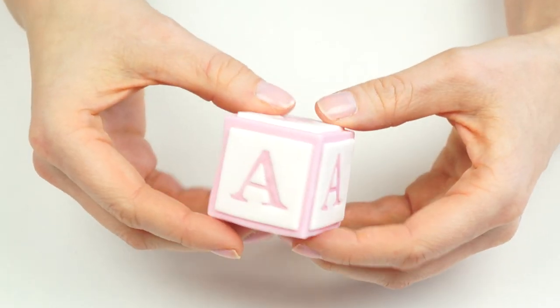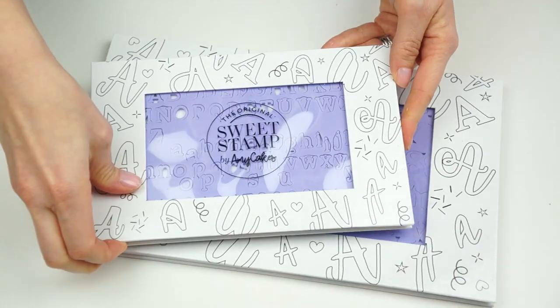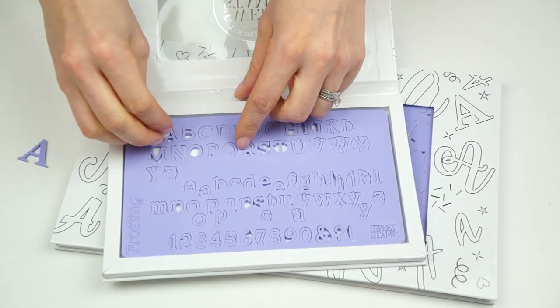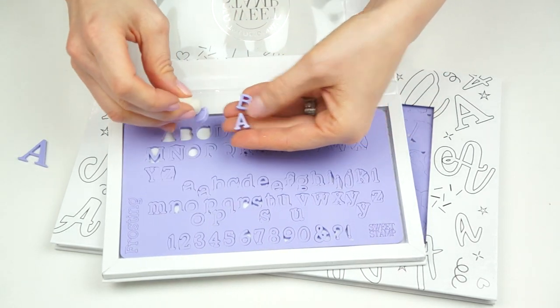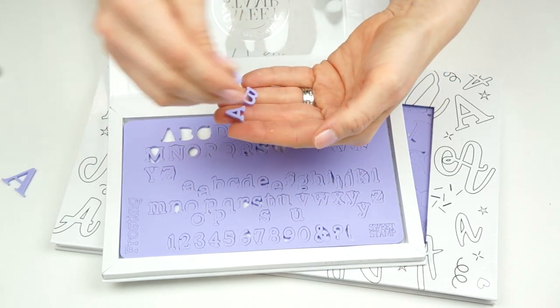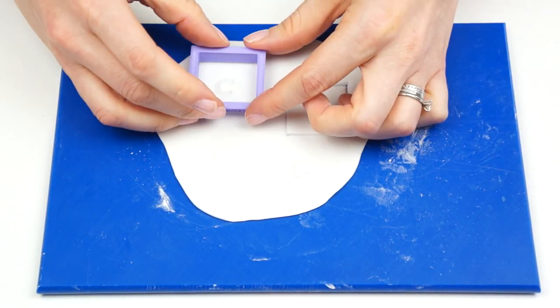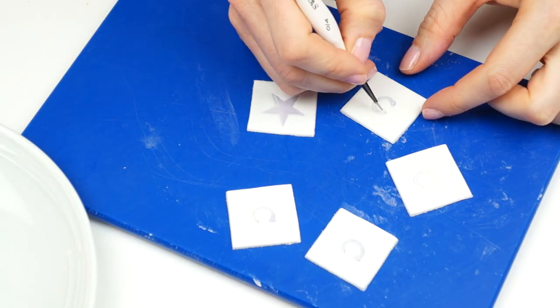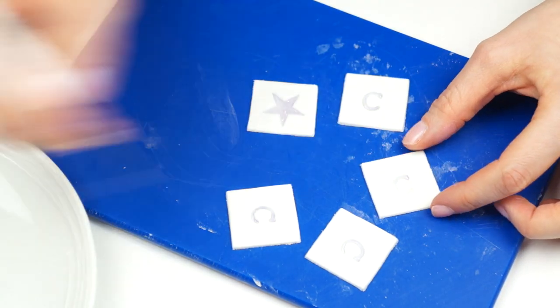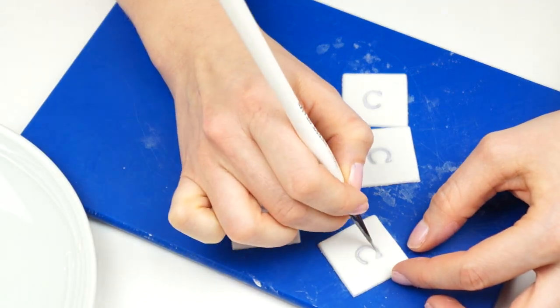So there we've got the first of our baby blocks. As an alternative if you wanted them slightly smaller I've got the Frosting Two set. The letters are quite a similar style, they're just quite a lot smaller. So for this one I'm going to be using the C. So again I cut out five of my squares, four of them had this small C on them and the final one I added a star. These were then painted in a slightly different color to our block so I used a purple paint.